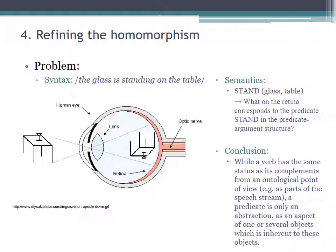That is, nothing that would be different from the objects of perception, that is, the glass and the table. Rather, a predicate is an abstraction. It is an aspect inherent to objects, but not different from objects.